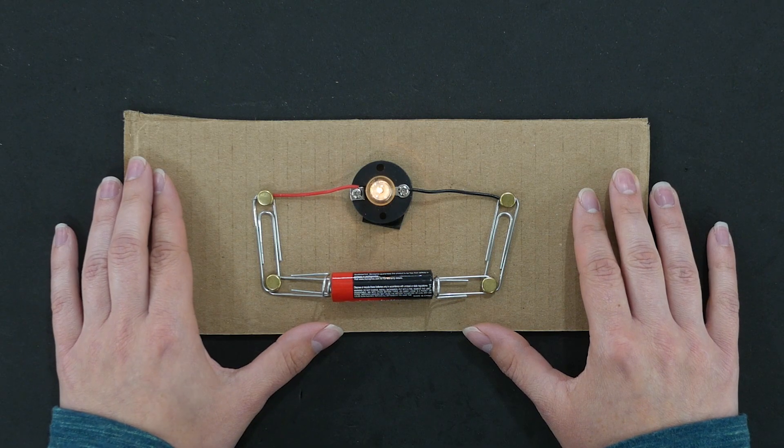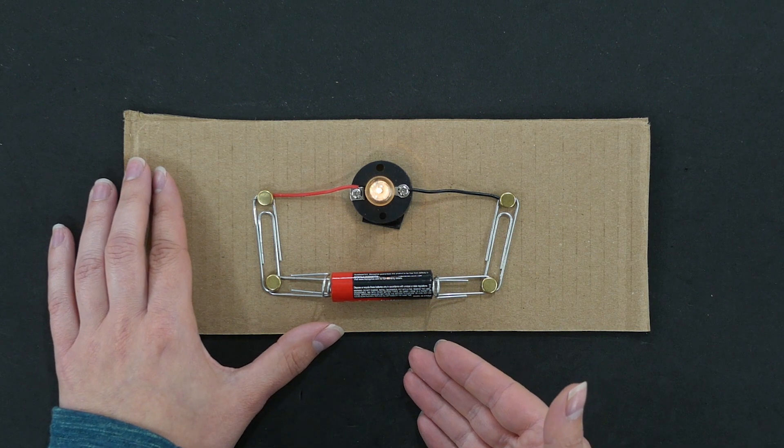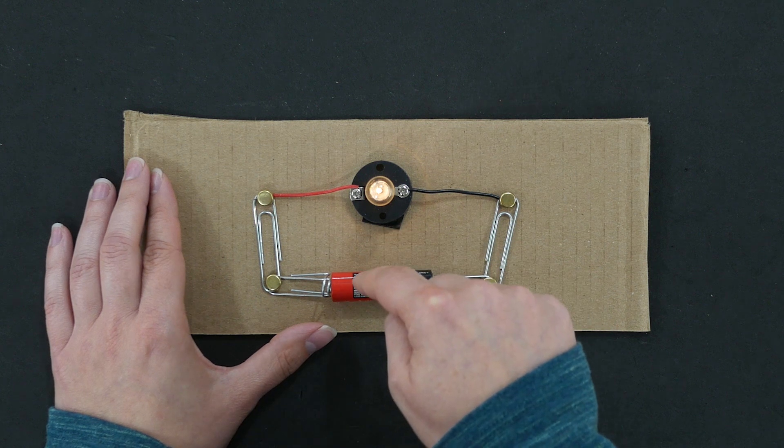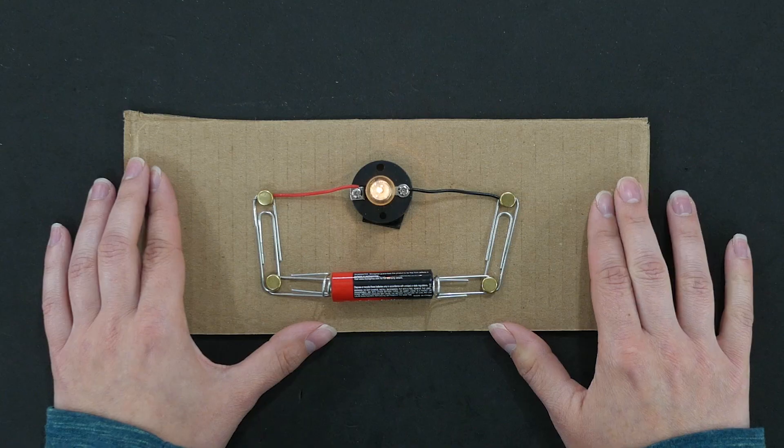In a previous episode I created this circuit. It has one battery that supplies 1.5 volts and that power travels through the paper clips to the light and then back around to the battery. It's a pretty simple circuit.